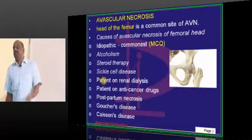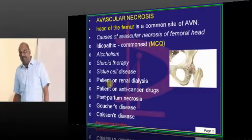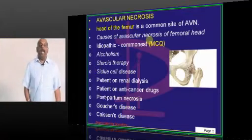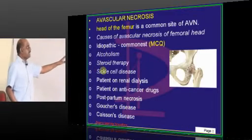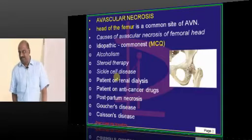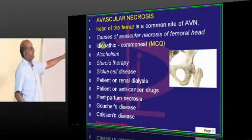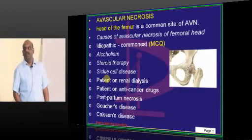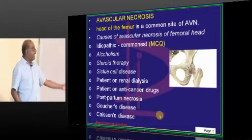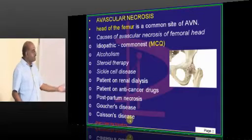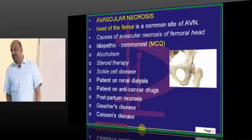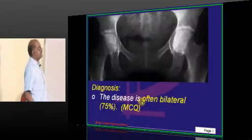Idiopathic is the commonest underlying cause for avascular necrosis. Alcoholism, steroid therapy, sickle cell disease, and those patients who are on renal dialysis are at risk of developing avascular necrosis. Patients who are on anti-cancer drugs and postpartum necrosis, Gaucher's disease — these are the other important causes responsible for the development of avascular necrosis.